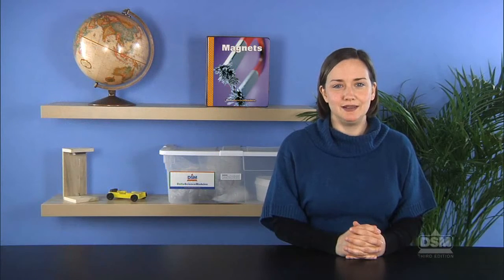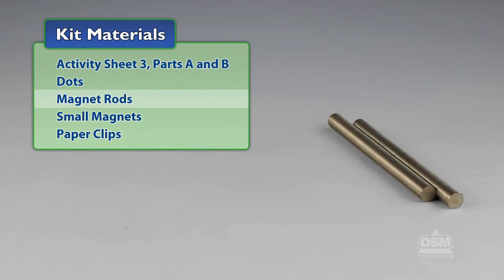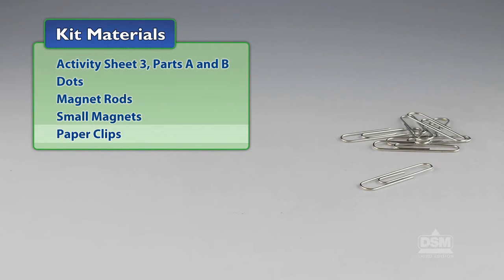You will need the following materials from the kit: Activity Sheet 3 Parts A and B, dots, magnet rods, small magnets, and paperclips.